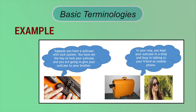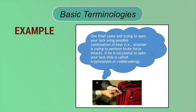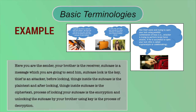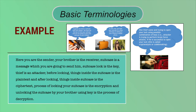In your way, you kept the suitcase in a shop while talking to a friend on your mobile phone. A thief came and tried to open the lock using possible key combinations — that is, the attacker is trying a brute force attack. If successful, this process is called cryptanalysis or code breaking. In this analogy: you are the sender, your brother is the receiver, the suitcase is the message, the lock is the key, and the thief is the attacker. Locking the suitcase is encryption; unlocking it by your brother using the key is decryption.